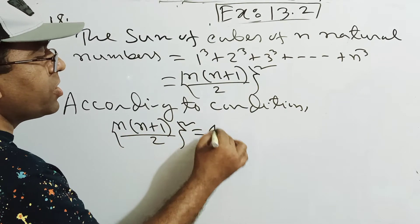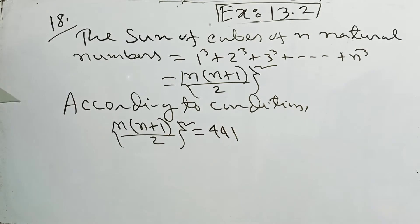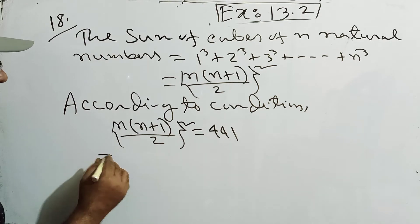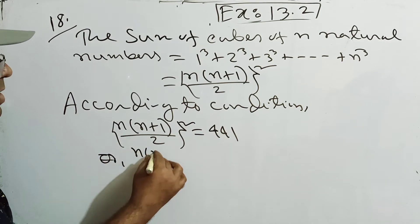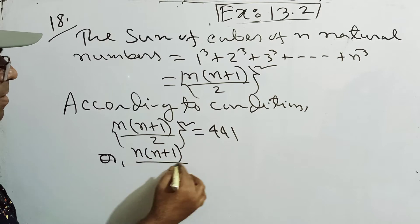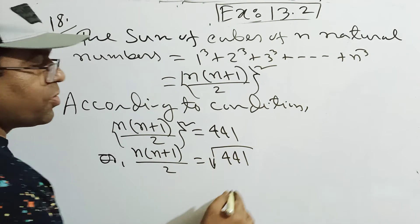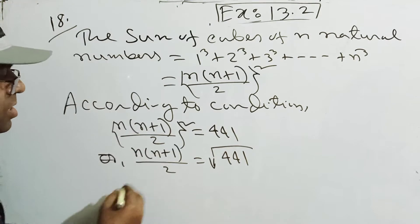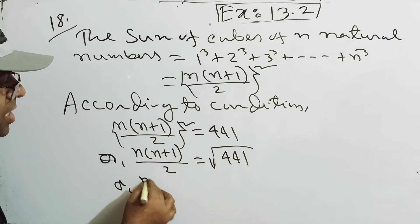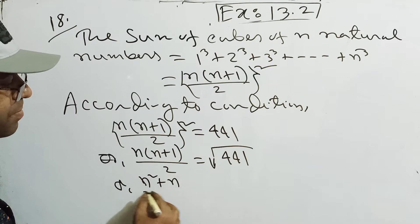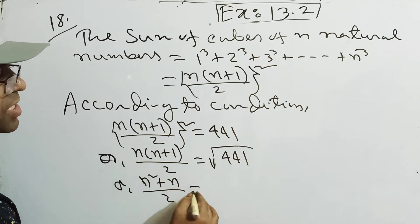Because the value is 441. Take square root of both sides. N(N+1) by 2 equals square root of 441, which gives 21.